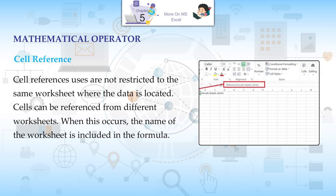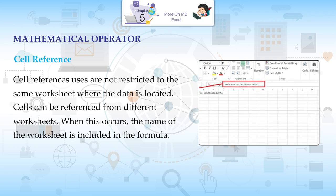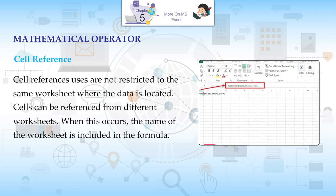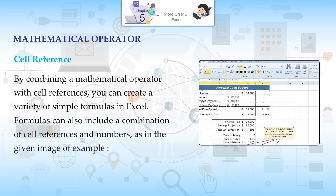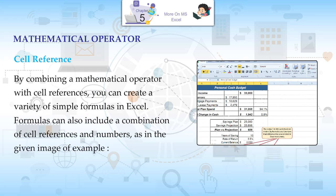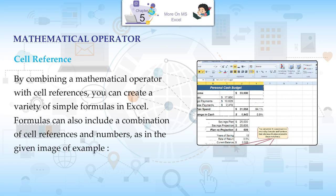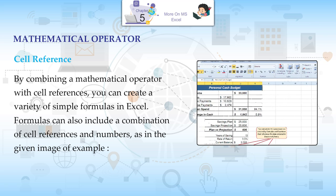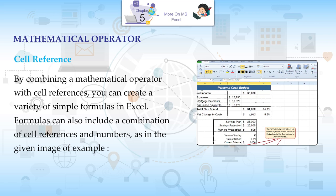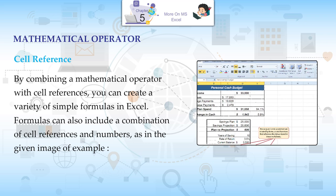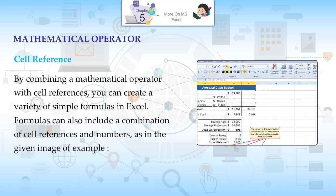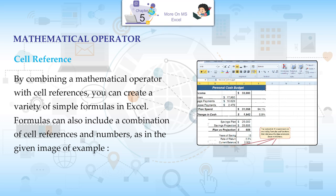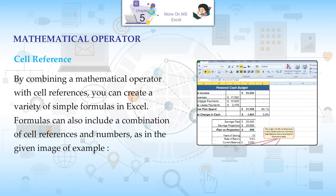Cells can be referenced from different worksheets. When this occurs, the name of the worksheet is included in the formula. By combining a mathematical operator with cell references, you can create a variety of simple formulas in Excel. Formulas can also include a combination of cell references and numbers.